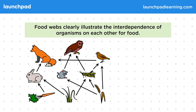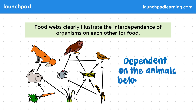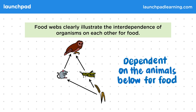For example, grains such as wheat are eaten by mice and mice are eaten by owls. The organisms at the top are dependent on the animals below for food. Let's simplify this diagram a little to take a closer look at an example of this interdependence.